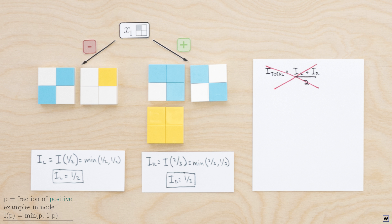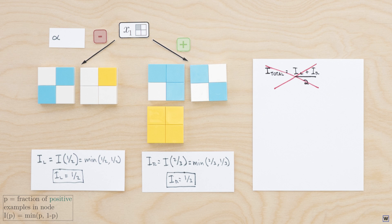Let's call the fraction of examples that end up in our left node alpha. Since the fraction of all examples that end up in each of our two nodes must add up to 1, the fraction of examples that end up in our right node will be equal to 1 minus alpha.